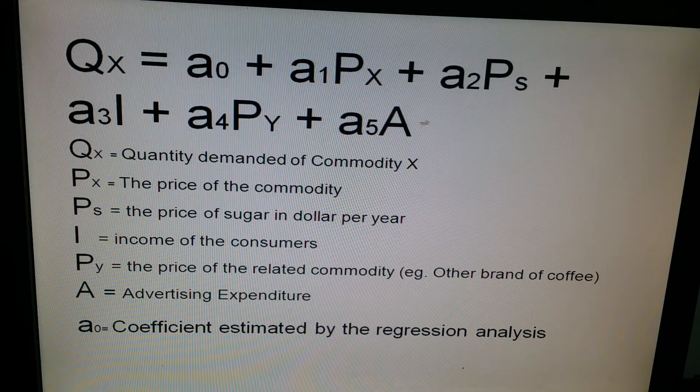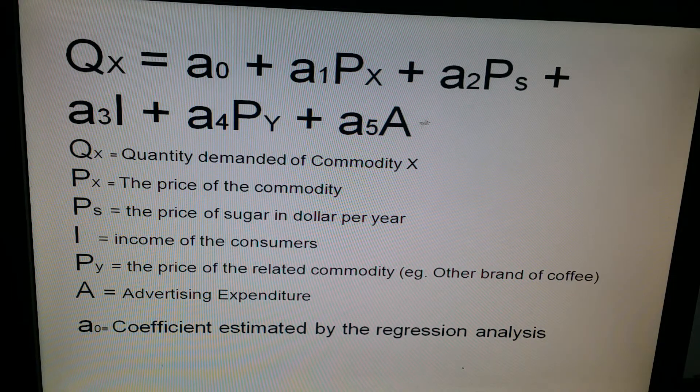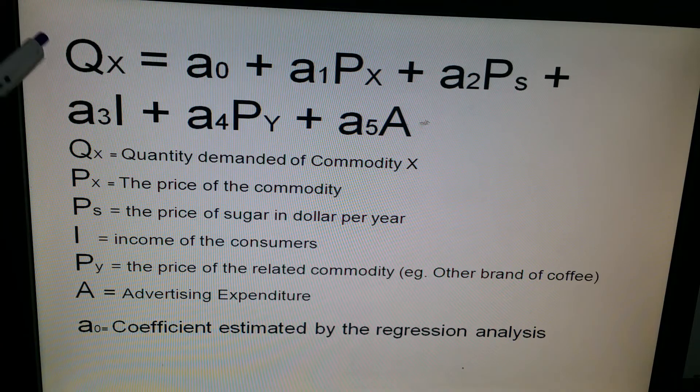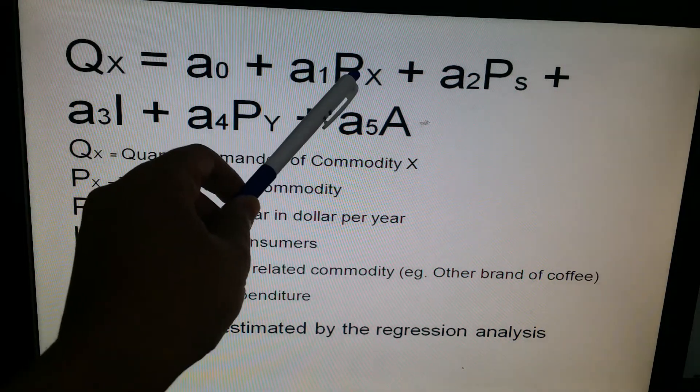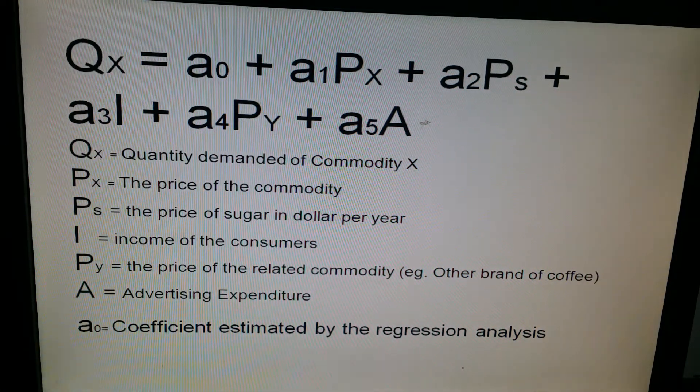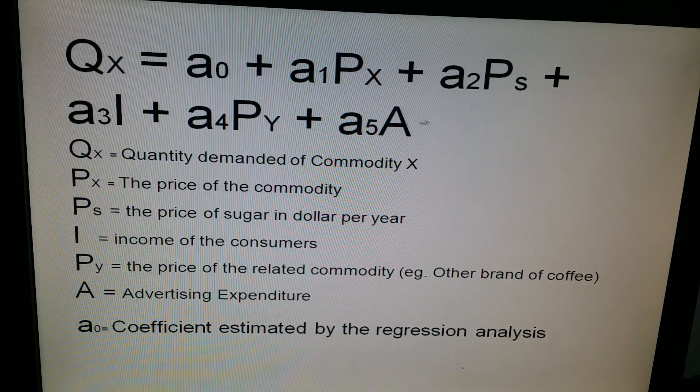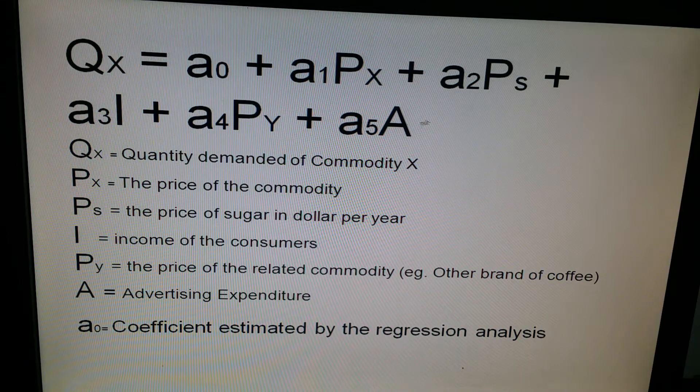So the quantity demanded of X depends upon the price of X, the price of the product, its own price. So this is what it shows. It also depends on, that's not the only factor. Remember when we were doing the analysis of movement along the curve, we said we were doing ceteris paribus, all other factors were constant.